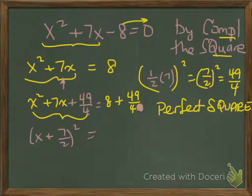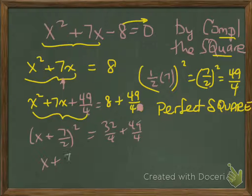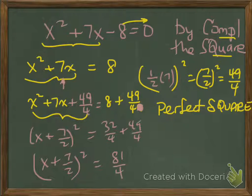8 plus 49 over 4 is the same as 32 over 4 plus 49 over 4, which results in x plus 7 halves squared equals 81 quarters.